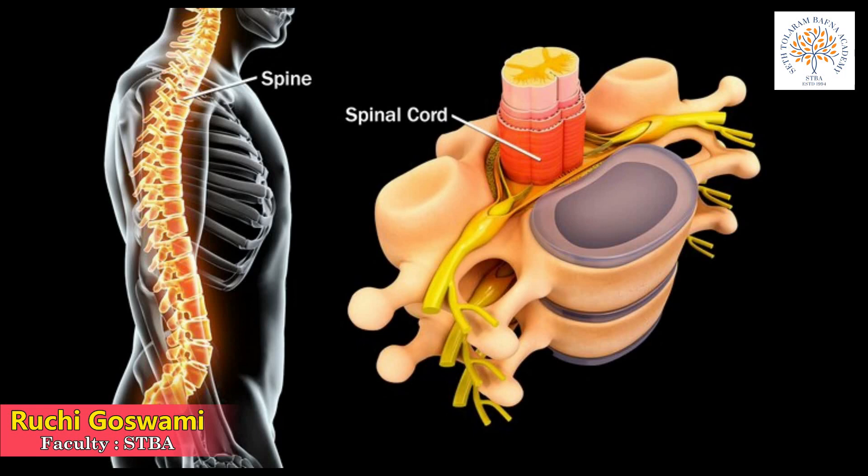A reflex action is an automatic action. For example, when we touch a hot object, our hand moves automatically. In reflex action, messages do not reach the brain — they are received by the spinal cord and the action is directed by the spinal cord itself.